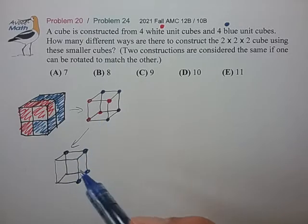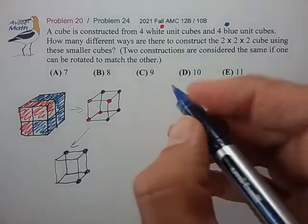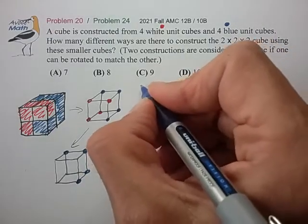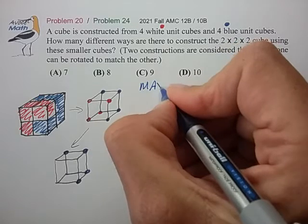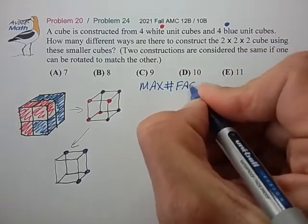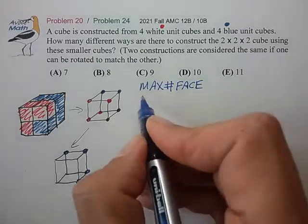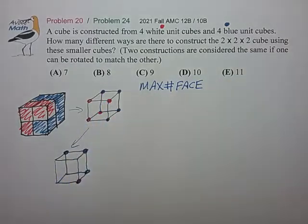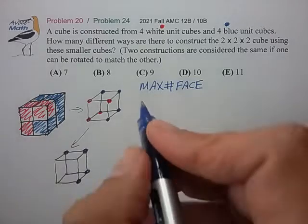So one way that occurs to me is why don't I organize this count into subsets based on the maximum number on a face. So we'll look at all the six faces of our cube and we'll count up the maximum number of blue dots on that face. And that's how we're going to organize our count.